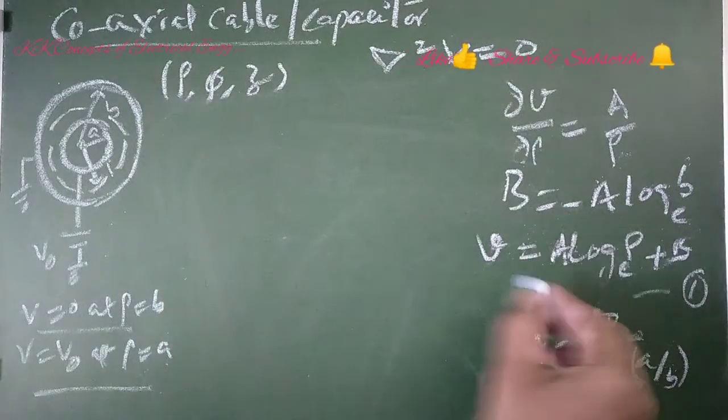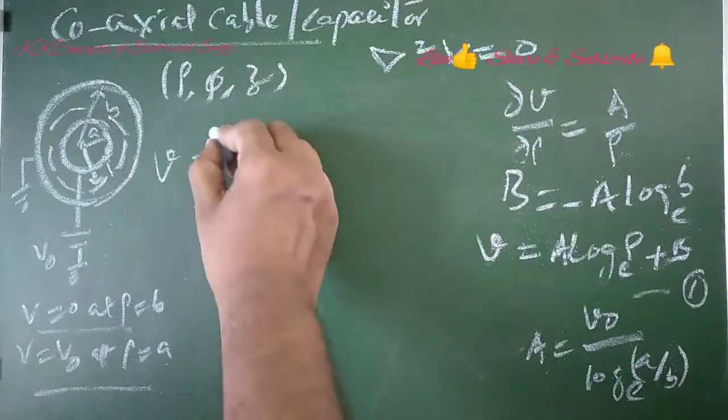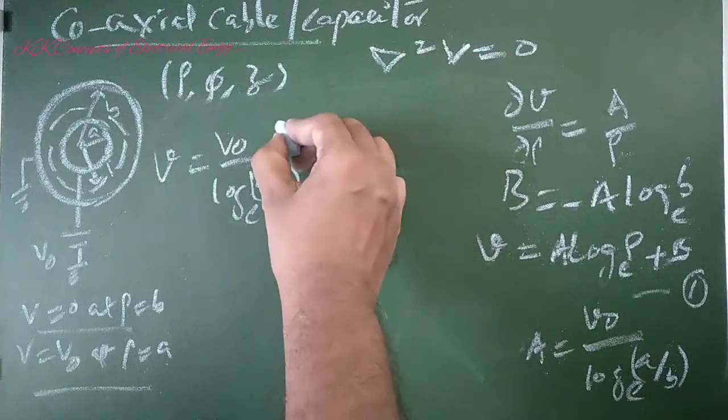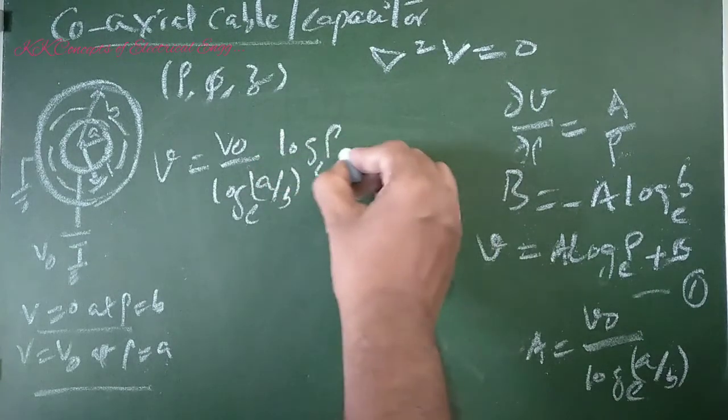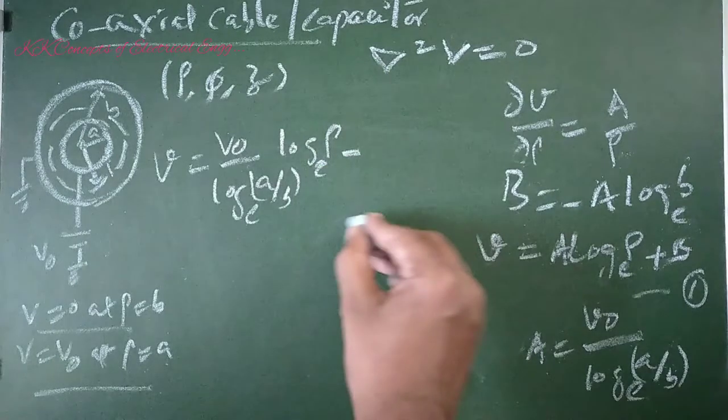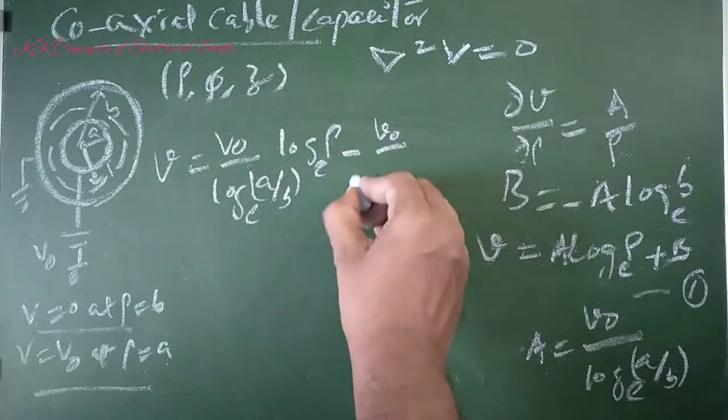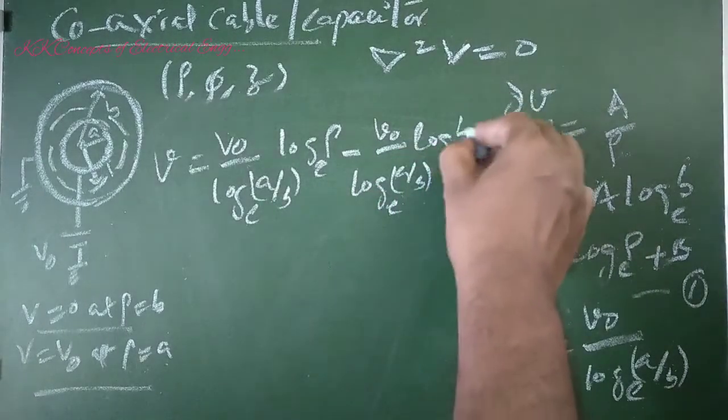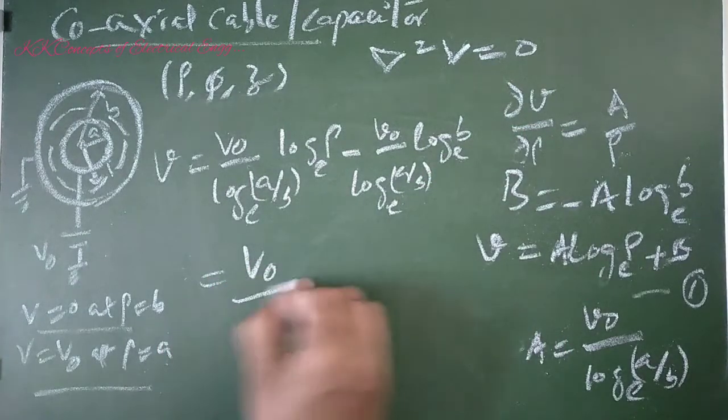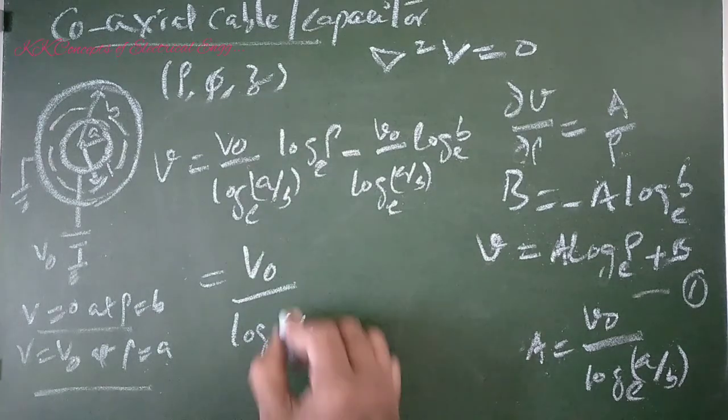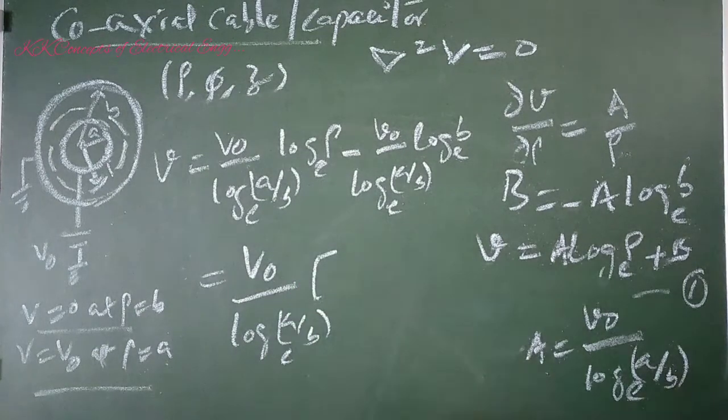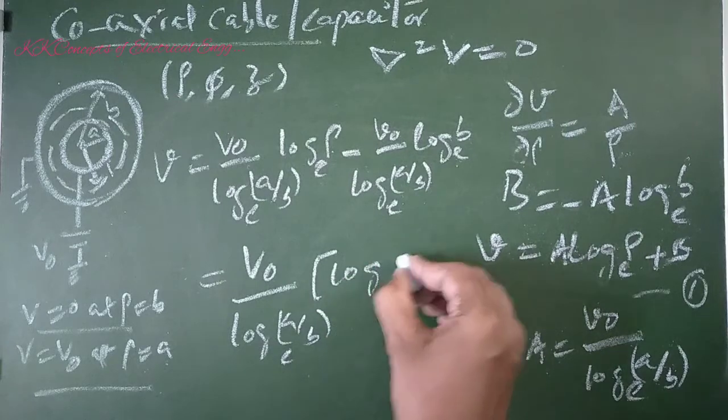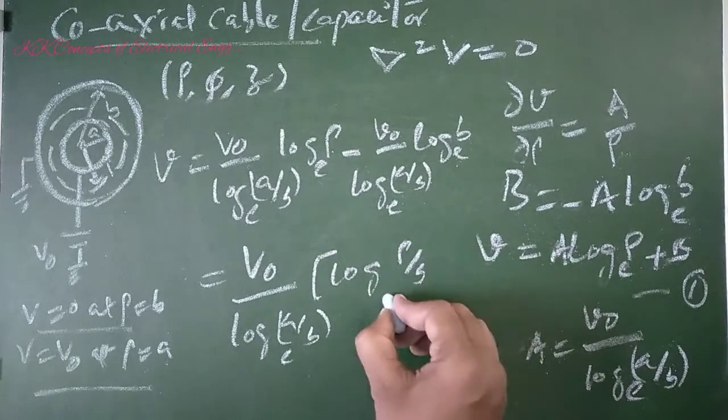Substitute values of A and B into equation number 1. V equals (V₀/log(A/B)) × [log ρ - log B] equals (V₀/log(A/B)) × log(ρ/B).